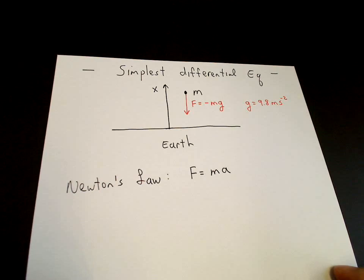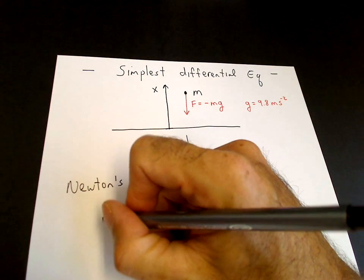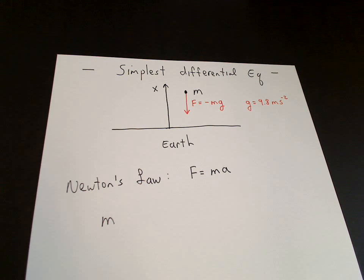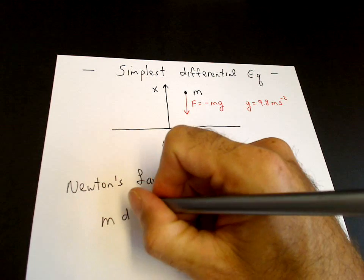So mass times acceleration - acceleration is related to velocity, velocity is related to position. So the velocity is delta x over delta t, or dx/dt in the calculus, which is d squared x dt squared.